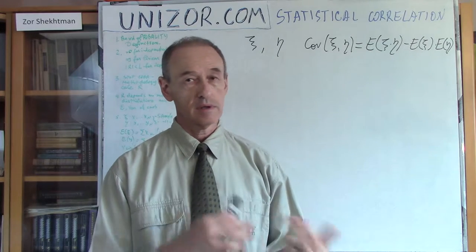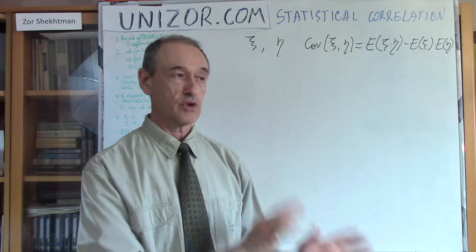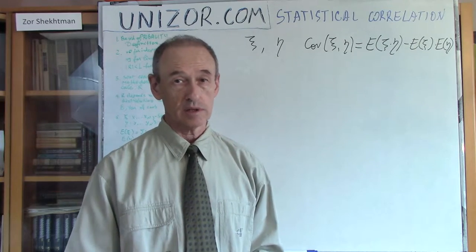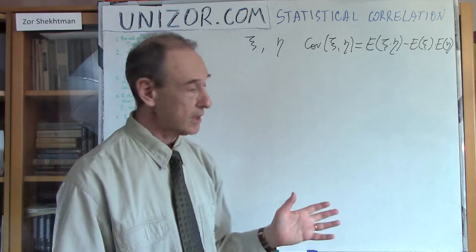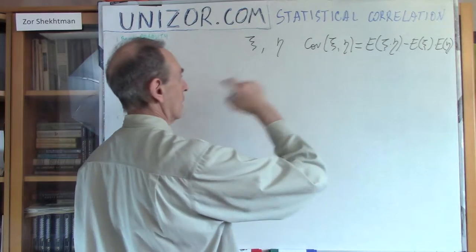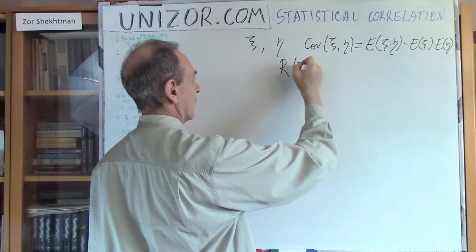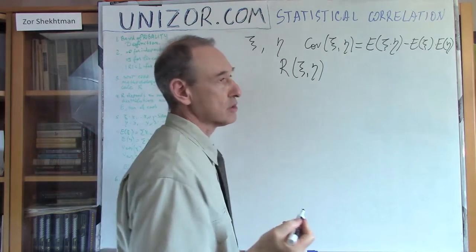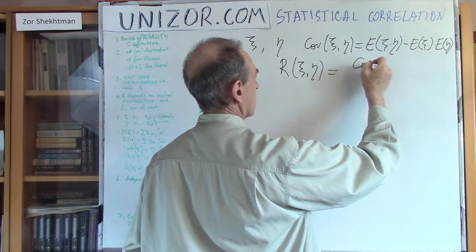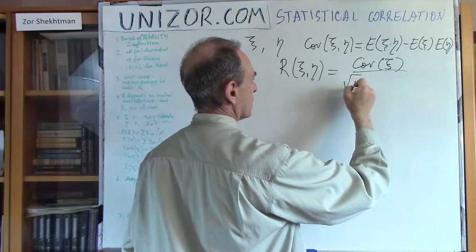The reverse is not always true — it might or might not be. If covariance is equal to zero, it does not necessarily mean the variables are independent; they might be or might not. The second thing I introduced in the theory of probability course was the correlation coefficient between them, which is defined as covariance divided by the square root of their variances.